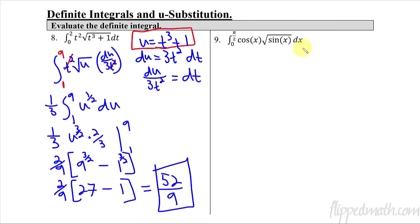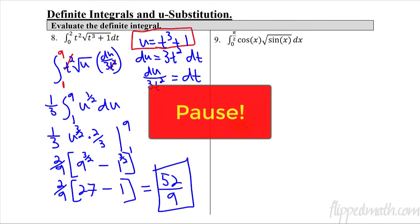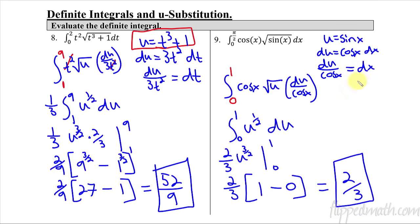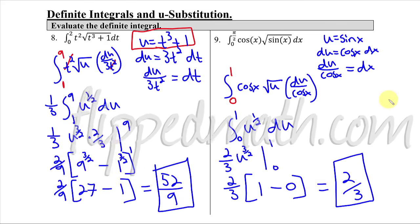Last problem — try this one on your own. See if you can figure out which expression is your u-substitution, then follow the steps to change the boundaries. The answer is 2/3. You had to start with u equals sine x and change the boundaries from 0 to π/2 to 0 to 1. Go through the practice, check your answers, and I'll see you in the next lesson.